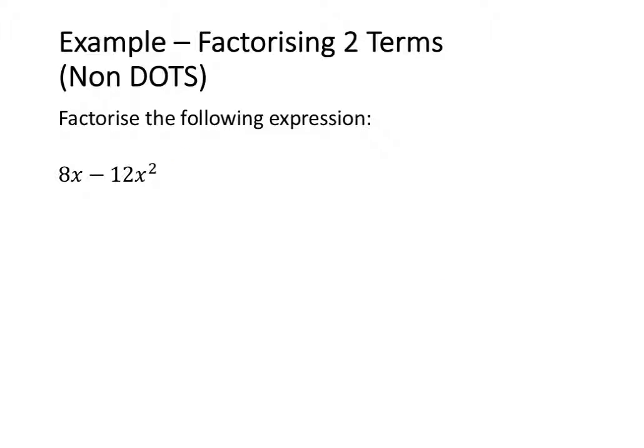In the second example, I'm going to factorise 8x minus 12x squared. The first step is to identify the highest common factor, and the highest common factor is going to be 4x.